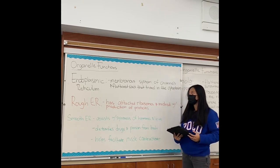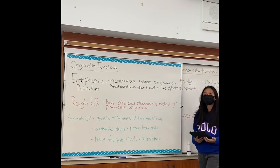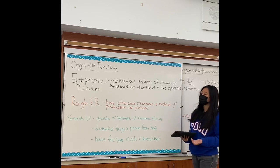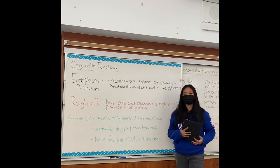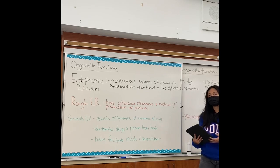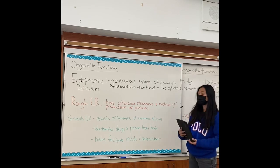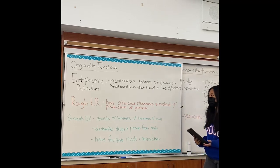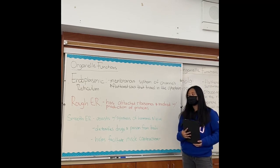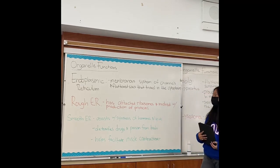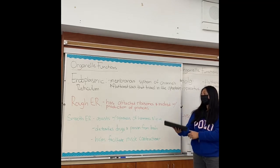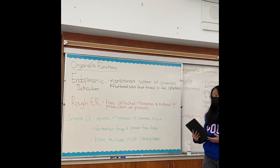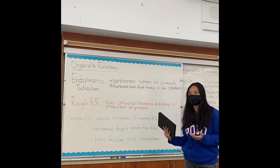Now I'm going to talk about the endoplasmic reticulum. The endoplasmic reticulum is basically a membranous system of channels and flattened sacs in the cytoplasm. There are two types: the smooth and rough ER. The rough ER has attached ribosomes and is involved with the production of proteins inside or outside the cell. The smooth ER assists with the synthesis of hormones or lipids, detoxifies drugs and poisons from the body, and helps facilitate muscle contraction with the storage of Ca²⁺ ions.